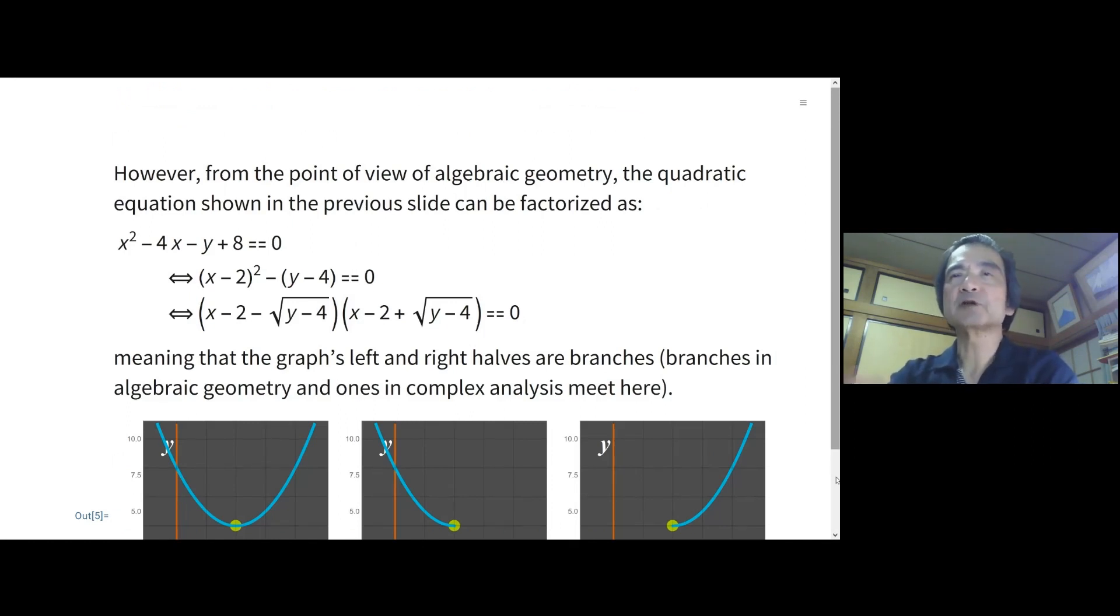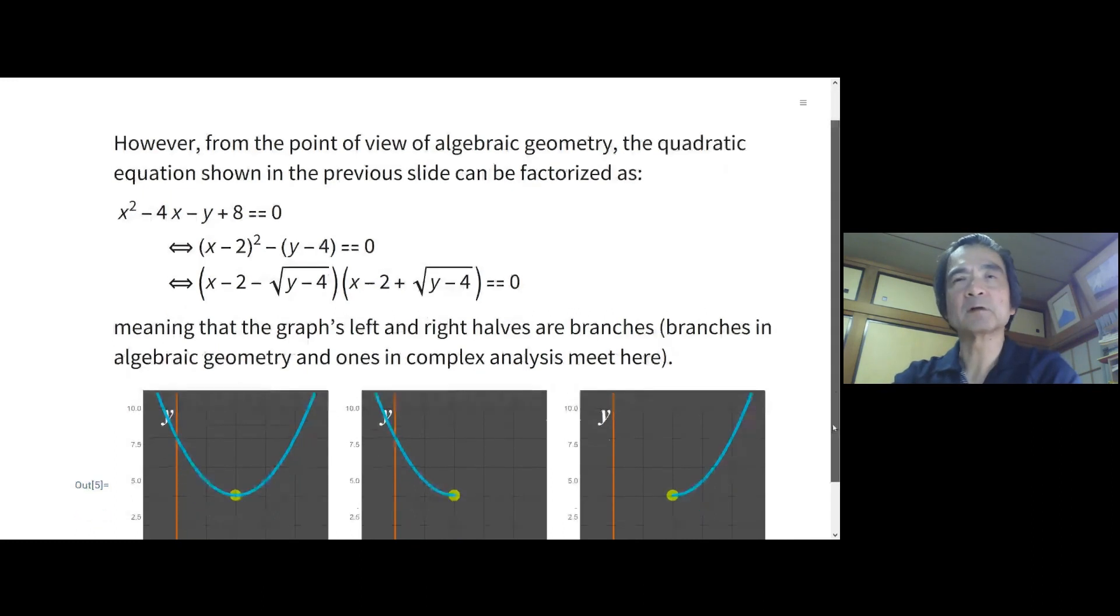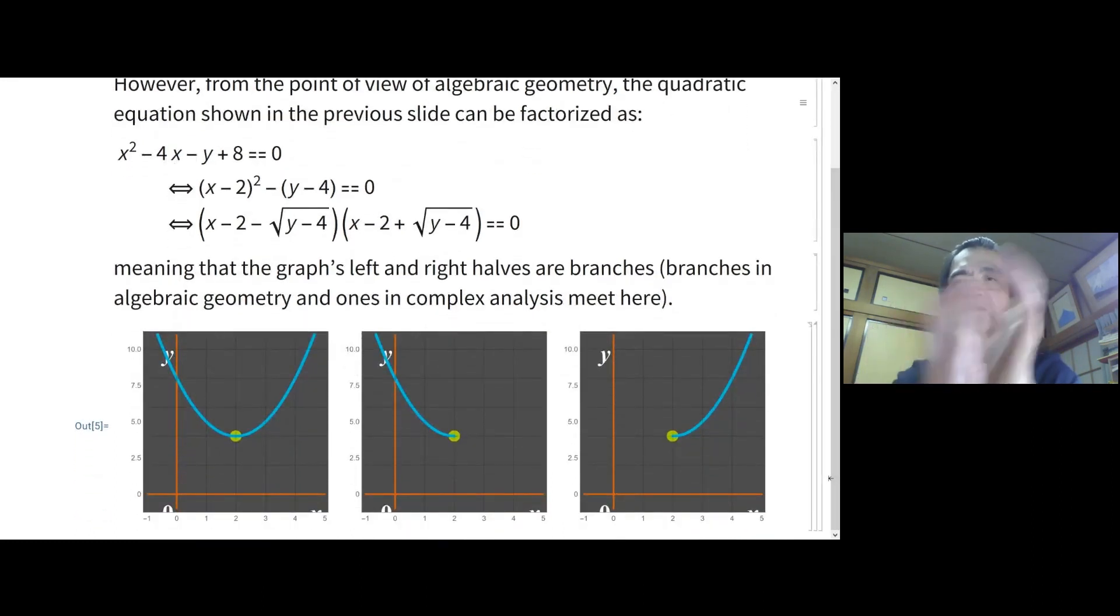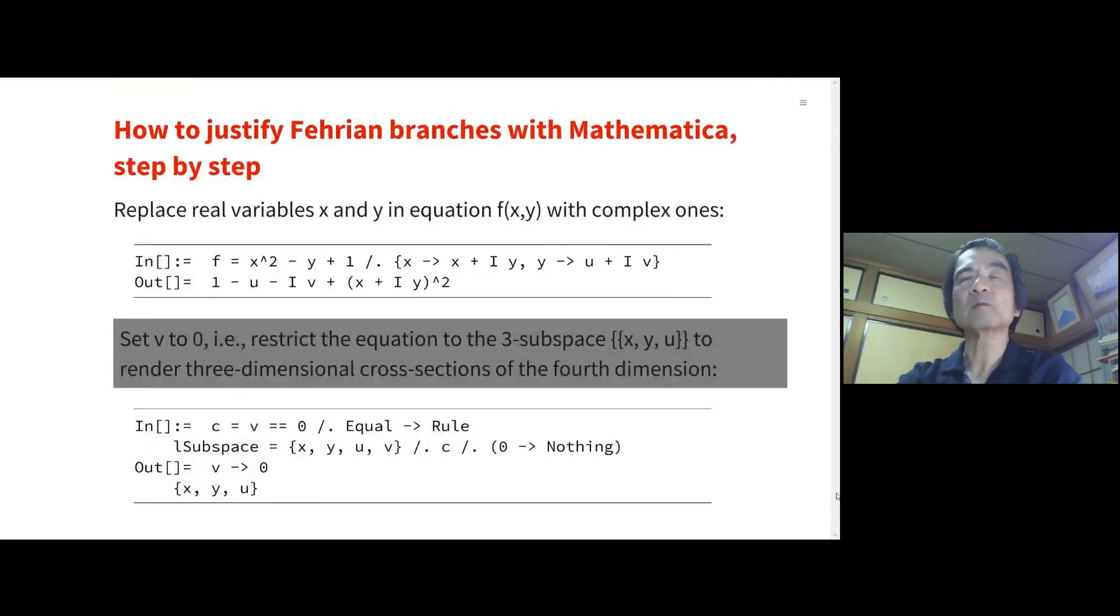From the point of view of algebraic geometry, the quadratic equation shown in the previous slide can be factorized as this equation. Meaning that the graph's left and right halves are branches. Branches in algebraic geometry and ones in complex analysis meet here. They share the same meaning.